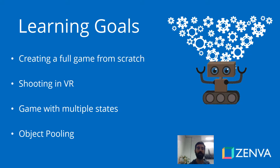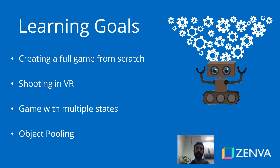Our learning goals: you'll be creating this full game from scratch. We'll put together all of these different elements and we'll see how we can shoot in VR, how we can position the gun — or it could be any other tool. We'll create a few objects that will help us manage the flow of the game when it comes to that initial screen, game over, winning screen, or the logic with the enemy.